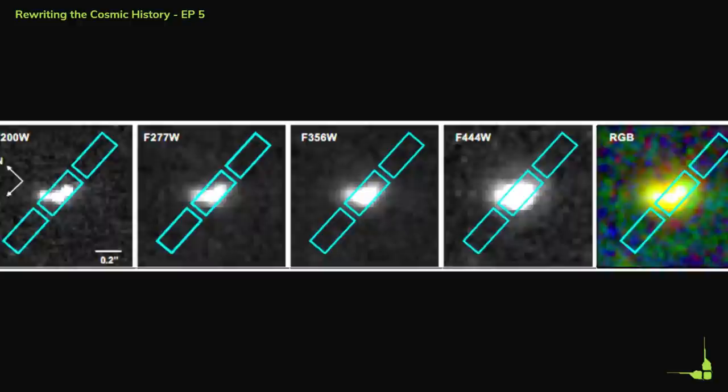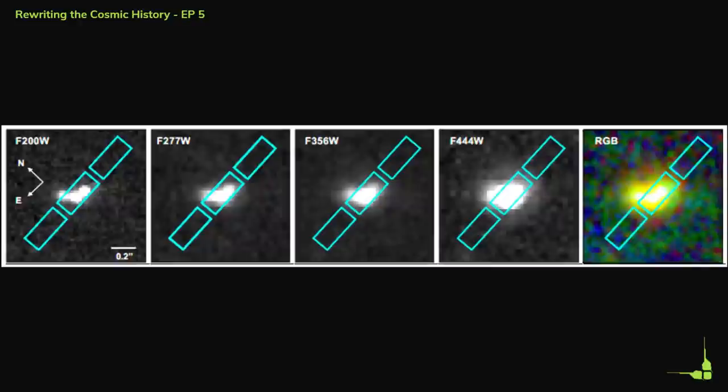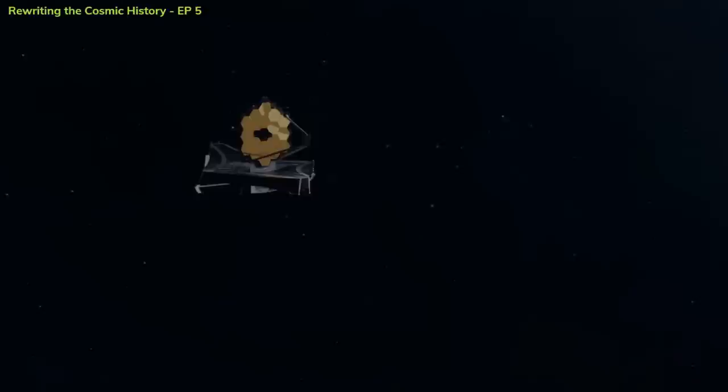The discovery of J03131806 is a milestone in our quest to understand the origin and evolution of supermassive black holes and quasars in the universe. It shows that these objects existed much earlier than we thought, and that they pose fascinating challenges for our theories and models. It also shows that James Webb is a powerful tool for exploring the distant and dark corners of the cosmos where new wonders await us.